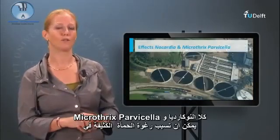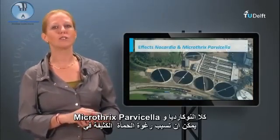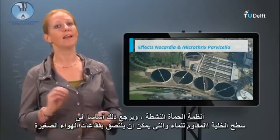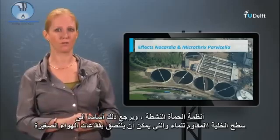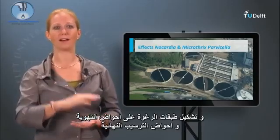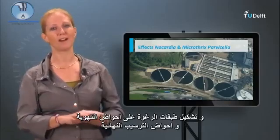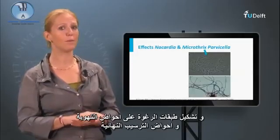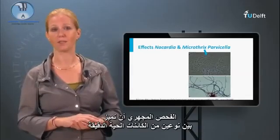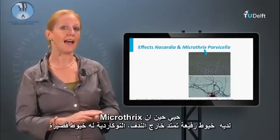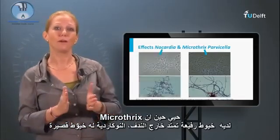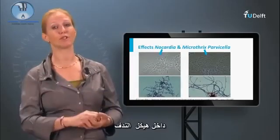Both Nocardia and Microtrix Parvicella can cause extensive sludge foaming in activated sludge systems, mainly due to their hydrophobic cell surface that can attach to small air bubbles, forming foam layers on aeration tanks and final clarifiers. Microscopic observation can distinguish the two types: Microtrix has thin filaments extending from the flock, while Nocardia has short filaments contained in the flock structure.